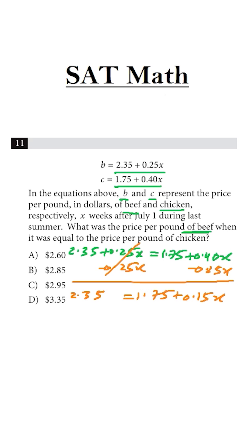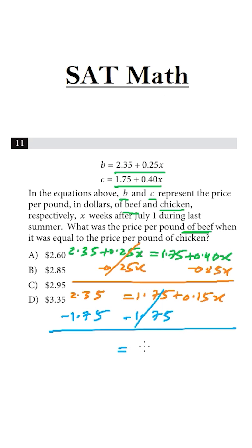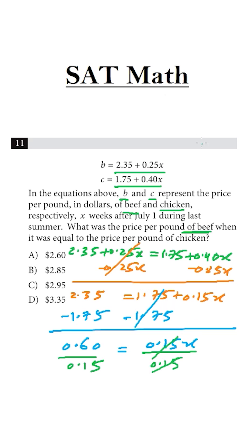Now let's bring the other values to the other side — minus 1.75 on both sides. On the right side we have 0.15X and on the left side we have 0.60. Divide both sides by 0.15 to get X. Getting rid of the decimals, 60 divided by 15 is 4.